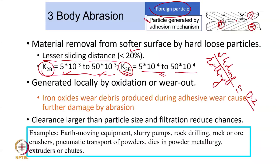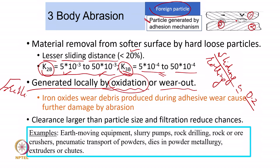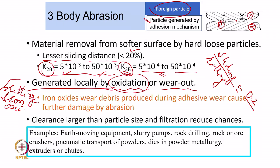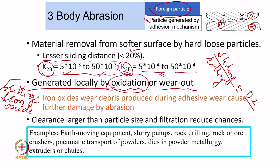Three-body abrasion was also mentioned in adhesive wear — there is a possibility that the third body can be generated by oxides or wear debris. Now this depends on whether the oxide is a hard or soft material. In fretting wear we will explain that some iron oxides turn out to be like a solid lubricant, and some iron oxides become very hard and cause three-body abrasion. Iron oxide wear debris produced due to adhesive wear can cause further damage by abrasion.